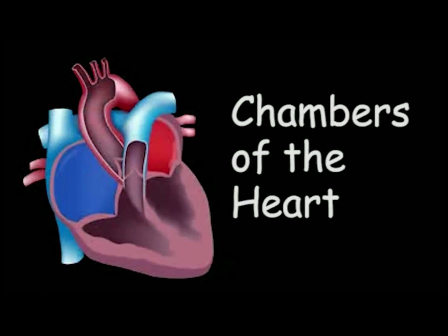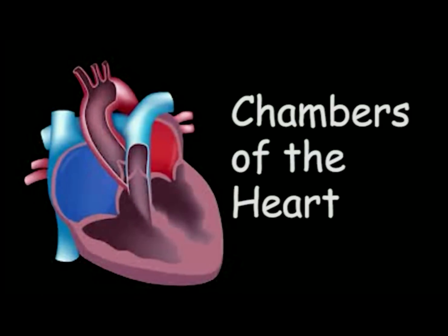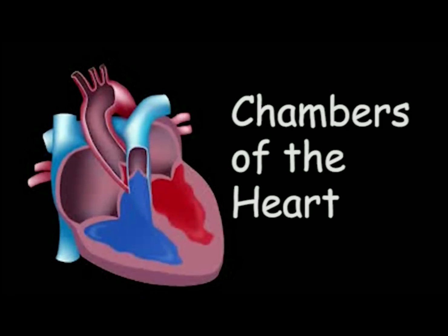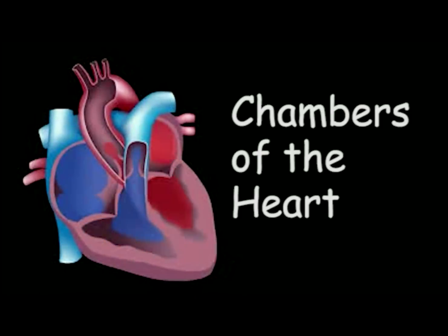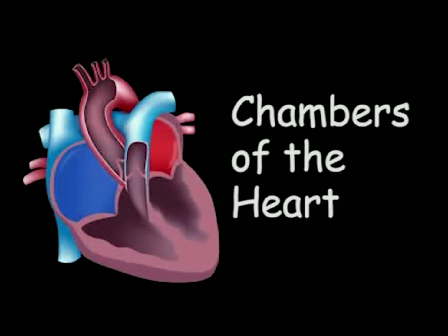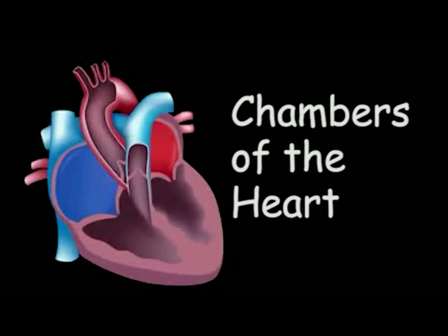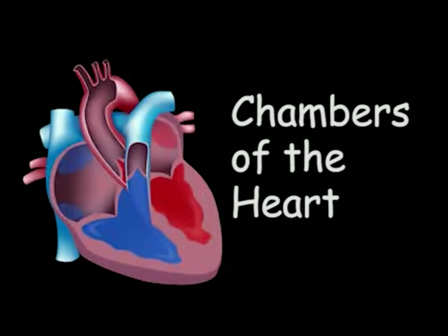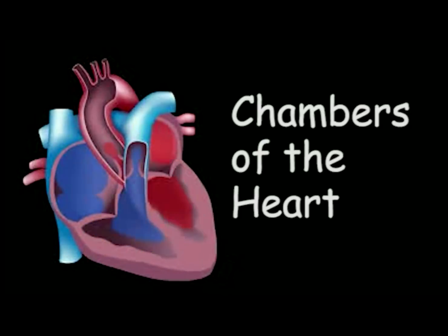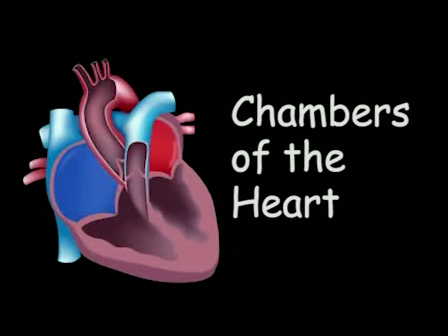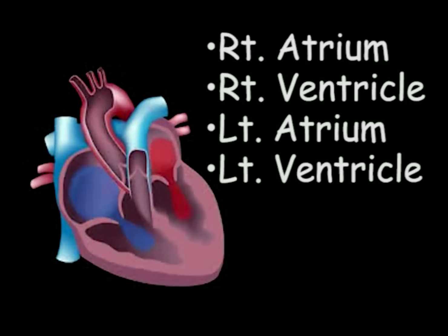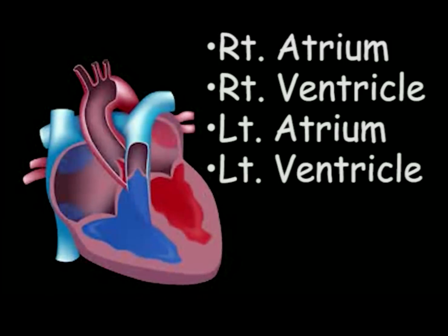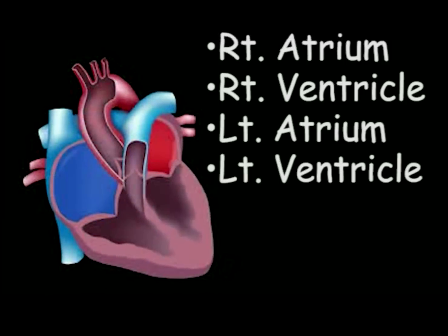The heart has four chambers. We have left chambers and we have right chambers. We have chambers above and chambers below. We have small chambers compared to bigger chambers — top, bottom, left, and right. They have names: we have the right atrium, the right ventricle, the left atrium, and the left ventricle.